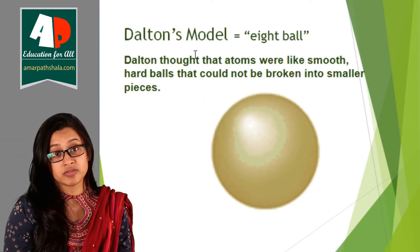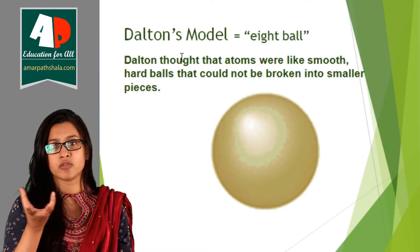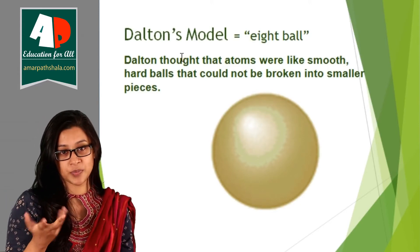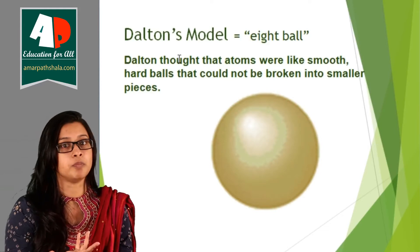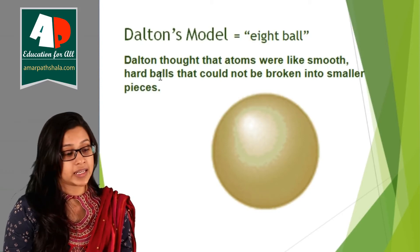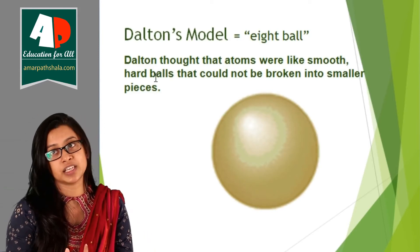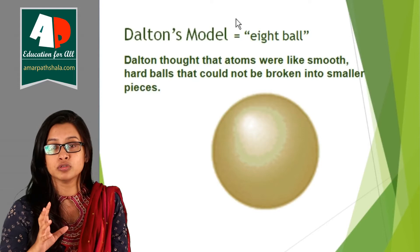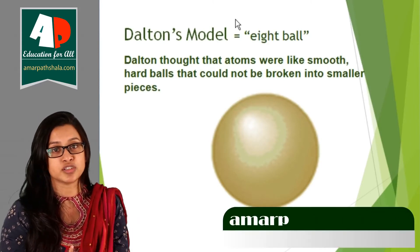On your screen right now is Dalton's model, which looks like an eight ball — like one of those future-predicting balls you shake and ask a question, or like the pool balls we play on pool tables. In Dalton's model, the atom looked like an eight ball. Dalton thought that atoms were like smooth, hard balls that could not be broken into smaller pieces — according to Dalton, if you take an atom which looks like a smooth hard ball, it couldn't be broken further.